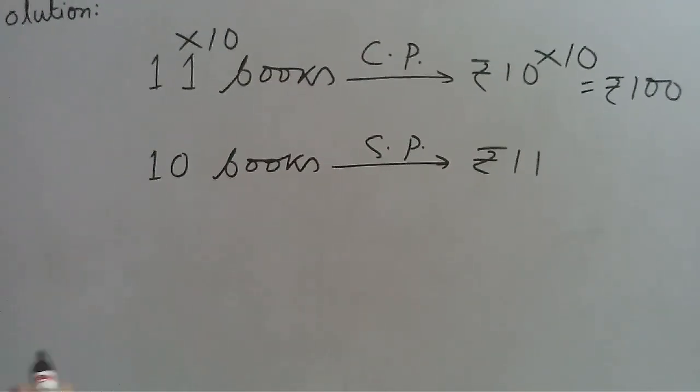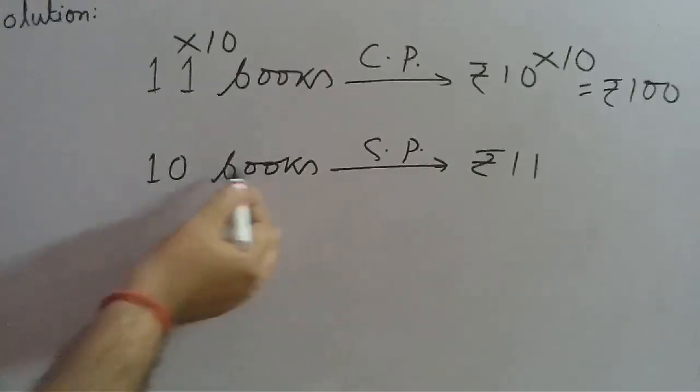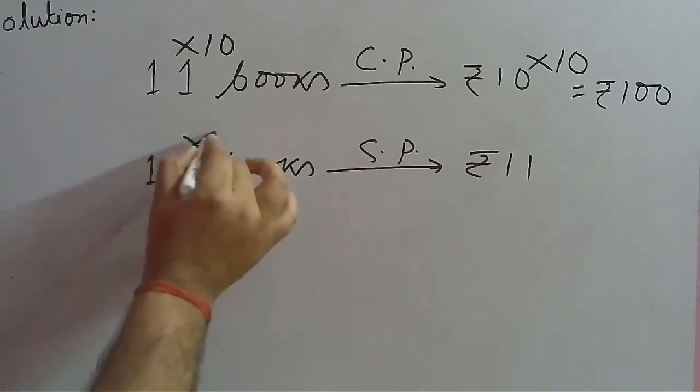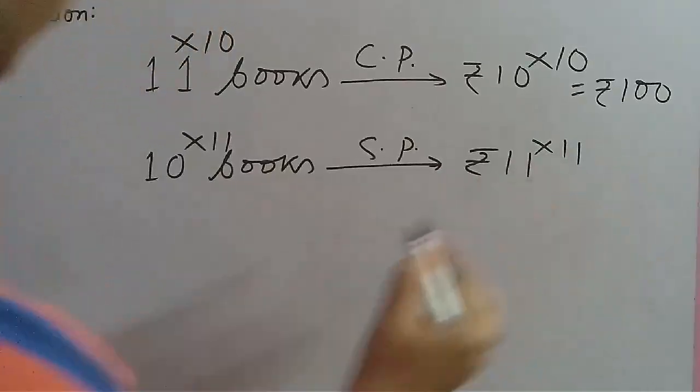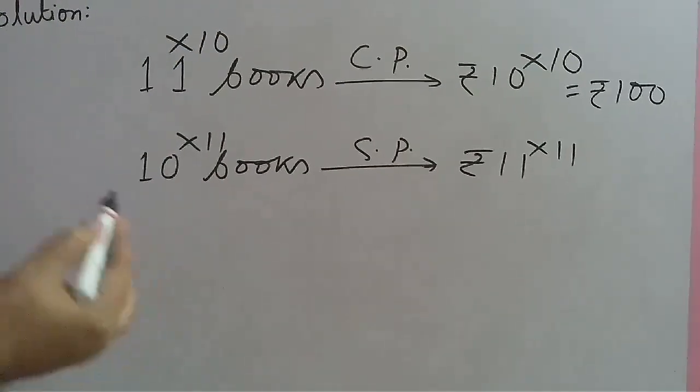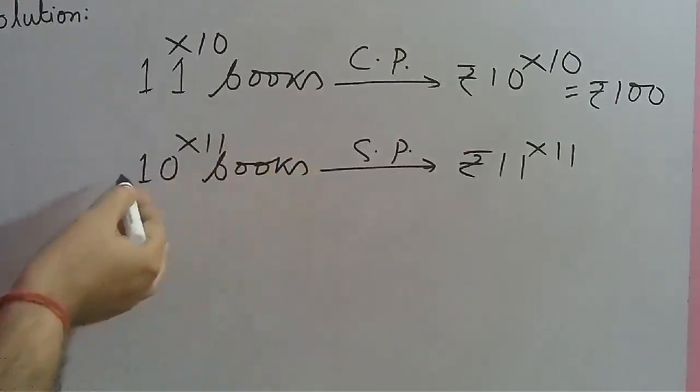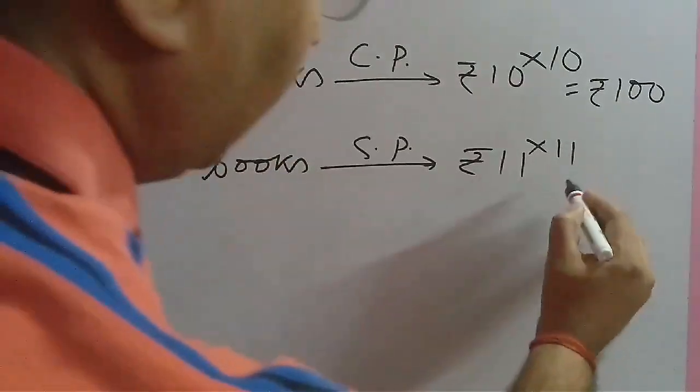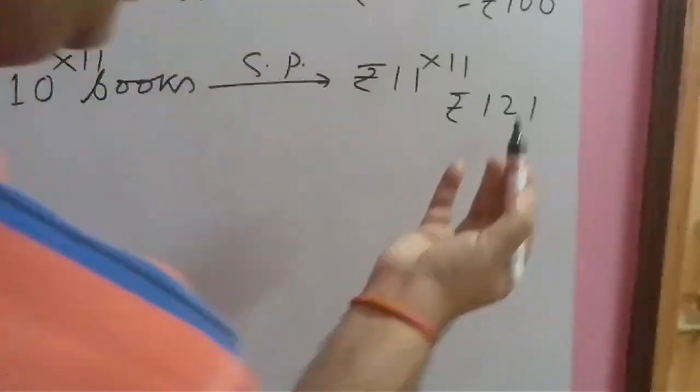For 10 books selling price is 11, so we must multiply by 11 on both sides. For 110 books, selling price is rupees 121.